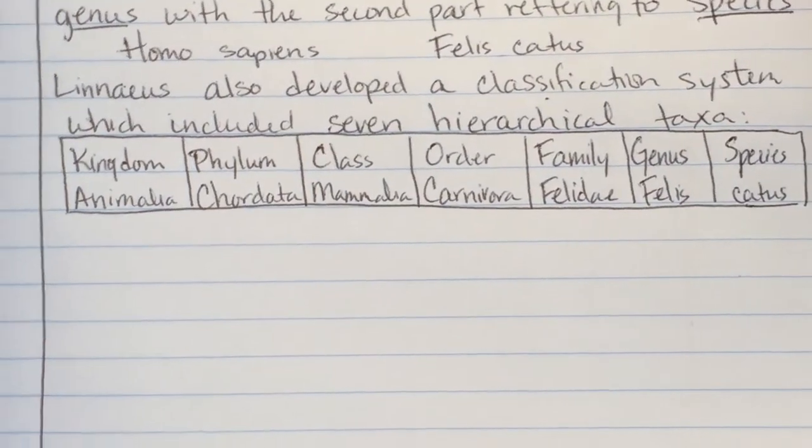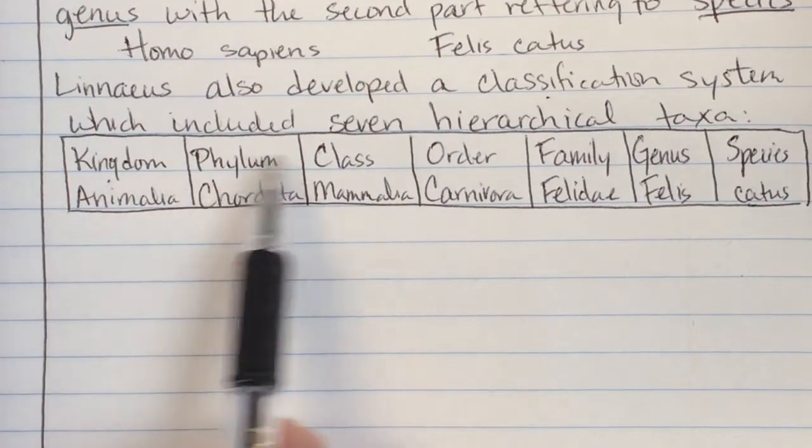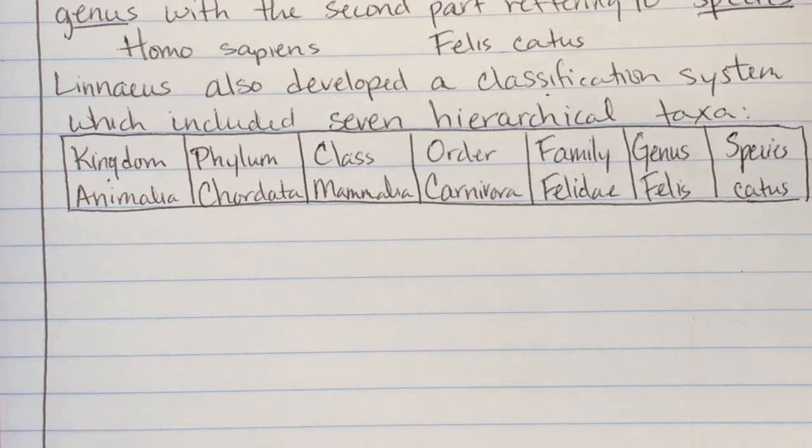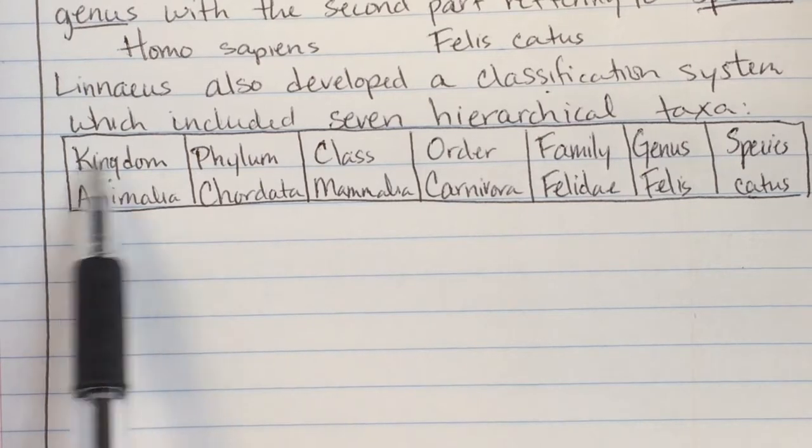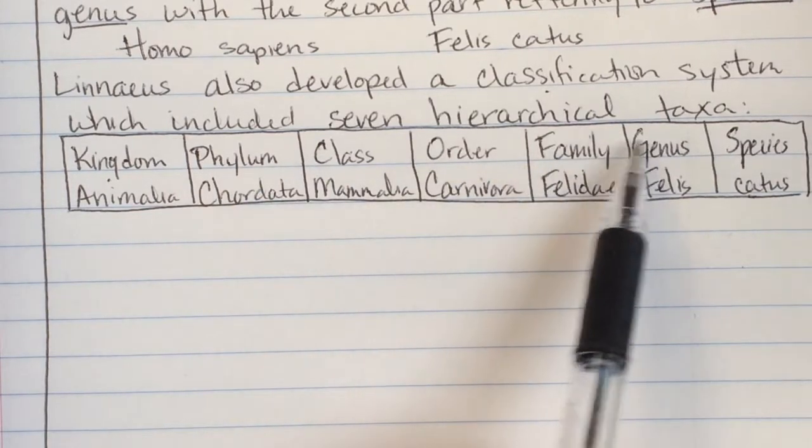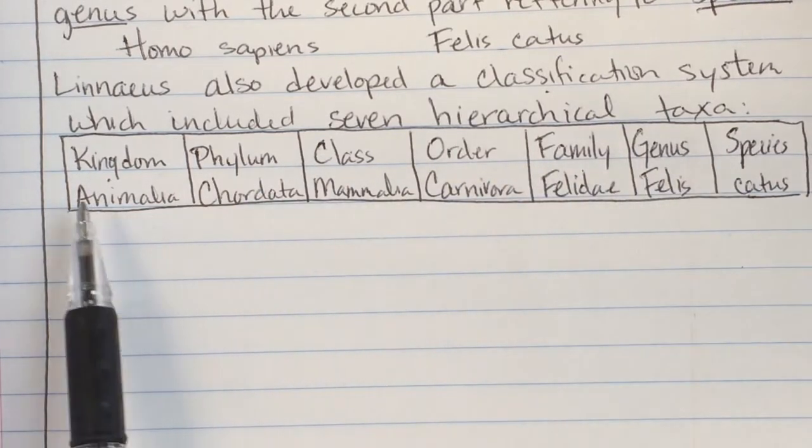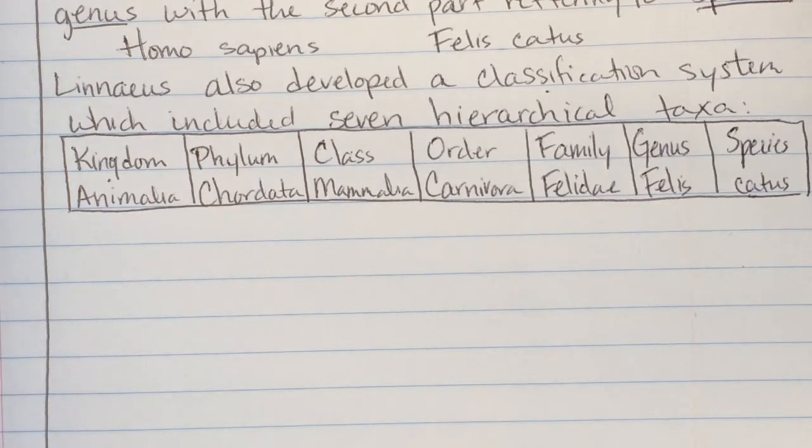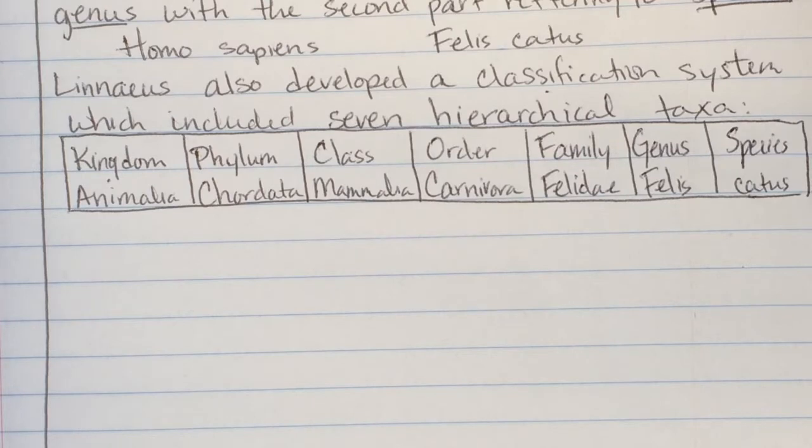So one of the things we do expect you guys to know is Kingdom Phylum Class Order Family Genus Species. And so there's lots of fun ways to remember that. Probably the safest one is King Philip cried, oh for goodness sakes. And you can ask your teachers. They probably have a few other ones that might be a little bit funner or a little bit more interesting.